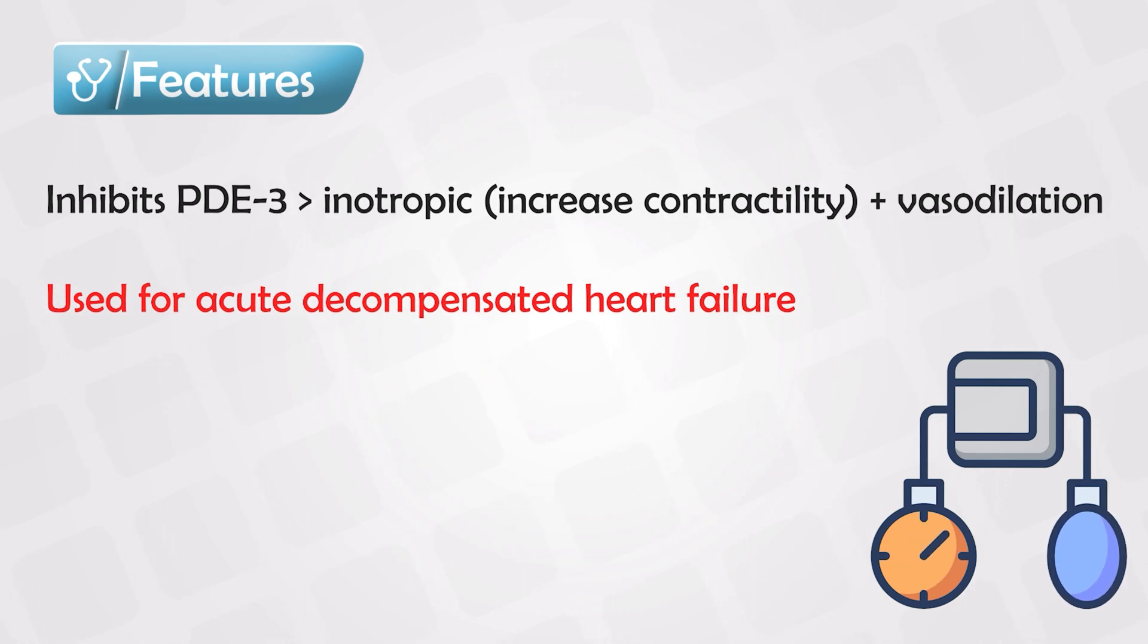But it also has some other effects on the vessels. The accumulation of cyclic AMP in the vessels will result in the inhibition of MLCK, and this causes general vasodilation, which can cause some hypotension.